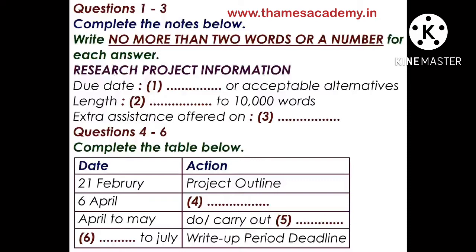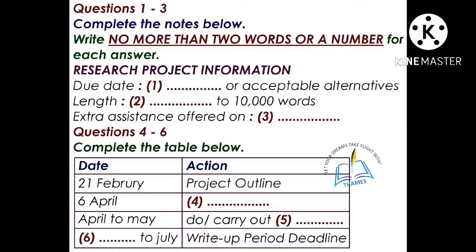Can I just check on the deadlines for everything? Certainly. Let me write it on the board — when each stage should be completed. First of all, you've got to work on your basic project outline, and that's due in to your course tutor by the 21st of February, which is only two weeks away, so you need to get cracking on that.